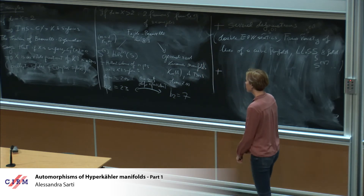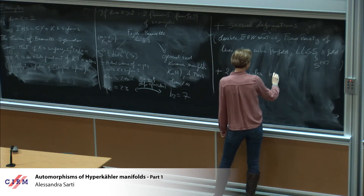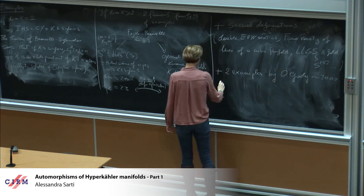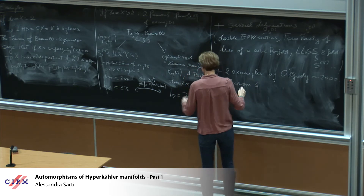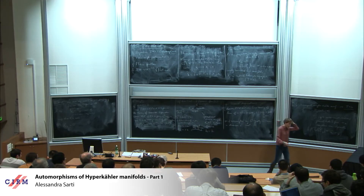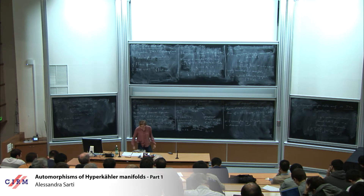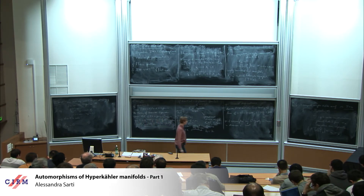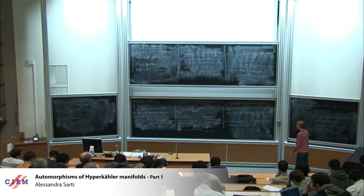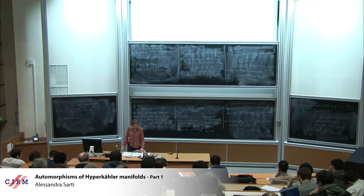To finish about the examples, there are two examples not deformation equivalent to the previous families, due to O'Grady around 2000, in dimensions six and ten. These are constructed by resolving certain moduli spaces of semi-stable sheaves on K3 surfaces and tori. Their second Betti numbers are 8 and 24, respectively, confirming they are genuinely different families from the previous ones.